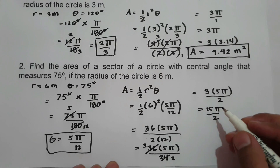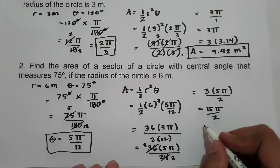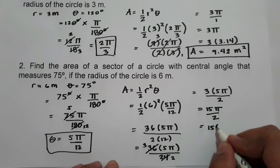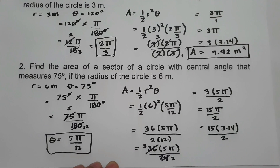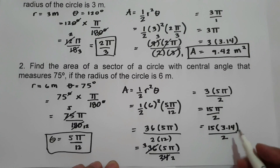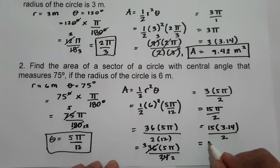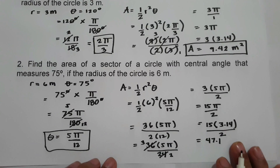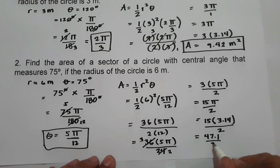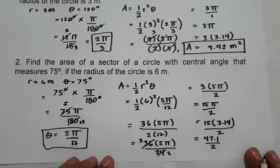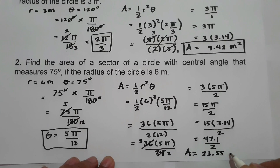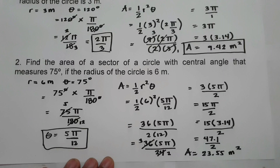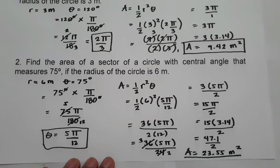Let us substitute the value of pi, which is 3.14. We have 15 times 3.14 over 2. 15 times 3.14 is 47.1, divided by 2, that is 23.55 meter square. This will be the area of our sector.